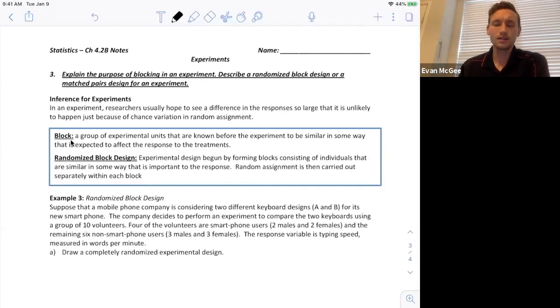So a block is a group of experimental units that are known before the experiment to be similar in some way and this is expected to affect the response in some manner. People aren't randomly assigned to blocks. They are put in the block based on some known characteristic beforehand and then the randomized block design is the design using these blocks consisting of individuals that are similar in some way that is important to the response and then after in the blocks random assignments carried out separately within each block.